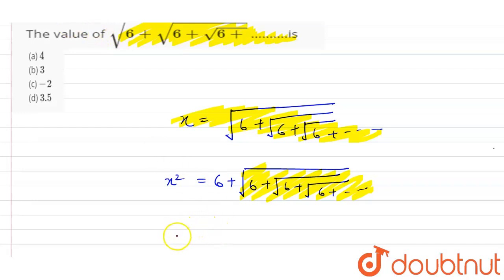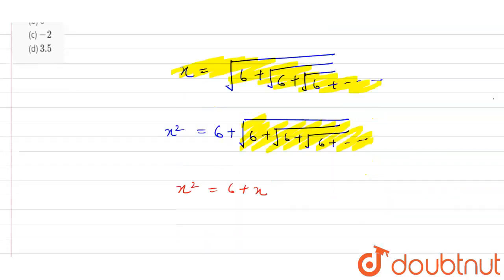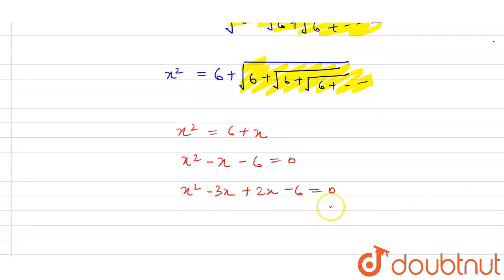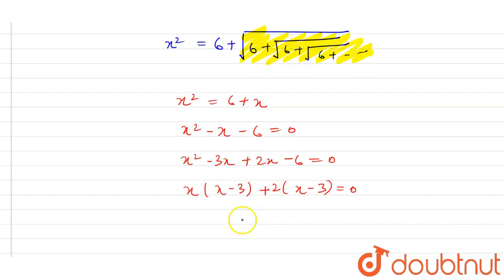Now x² = 6 + x, which gives x² - x - 6 = 0. So x² - 3x + 2x - 6 = 0. Now x(x - 3) + 2(x - 3) = 0, which gives (x - 3)(x + 2) = 0.